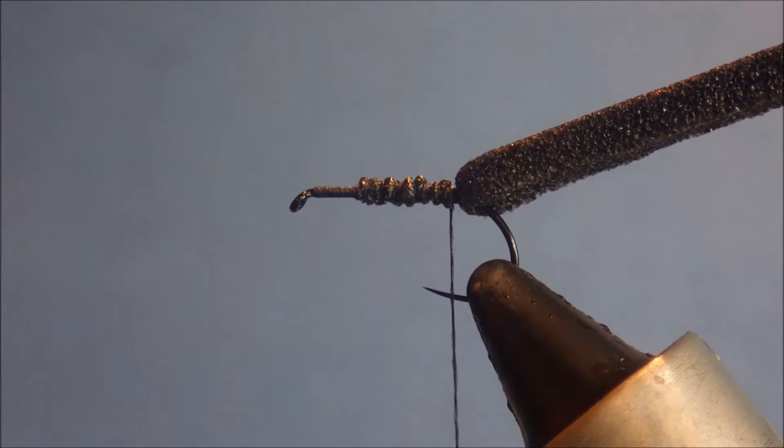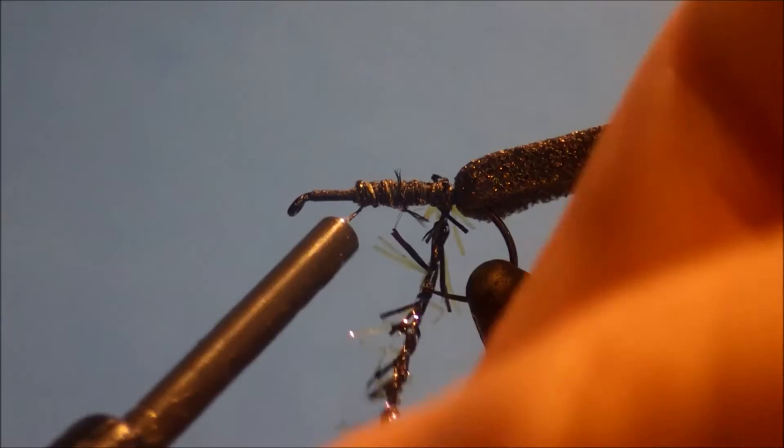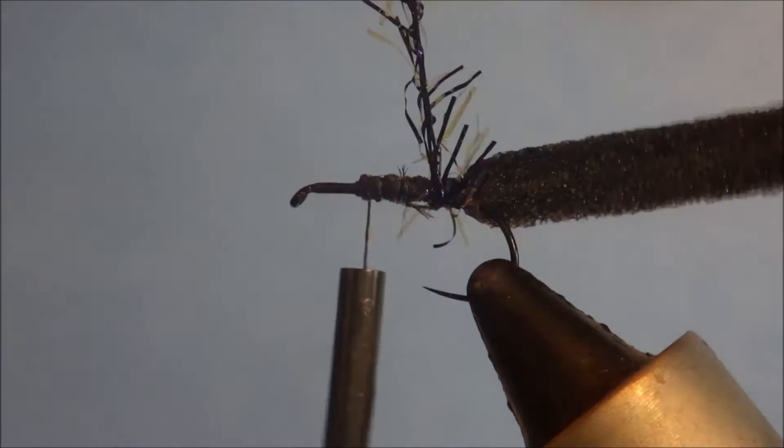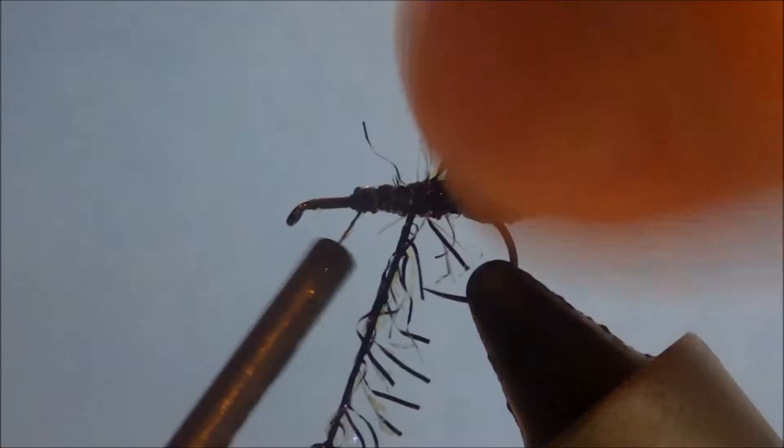And then, for the body, I'm using Semperfly straggle string. It's just a short straggle type material. This is black UV. It's really nice for the beetle patterns. And then, I'm just going to wind this forward. You might need to sort of help the fibers to stick out a wee bit.